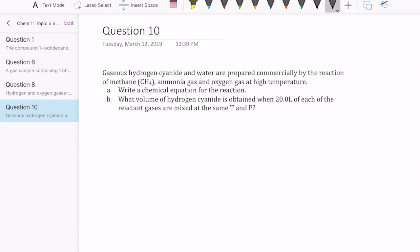Okay, let's take a look at this problem now, number 10 in topic set 5. We were asked first to write the chemical equation and second point is we're asked to calculate how much hydrogen cyanide is made when we have 20 liters of each of the reactants being mixed at the same temperature and pressure.